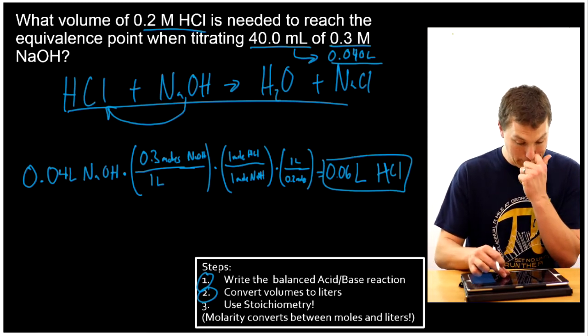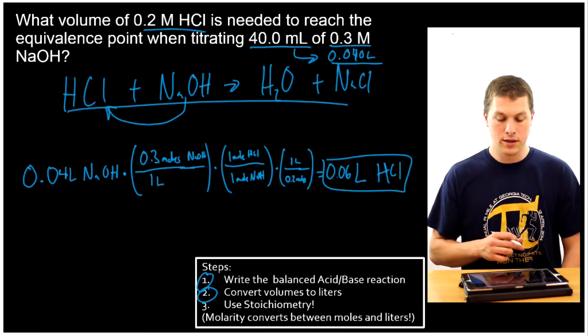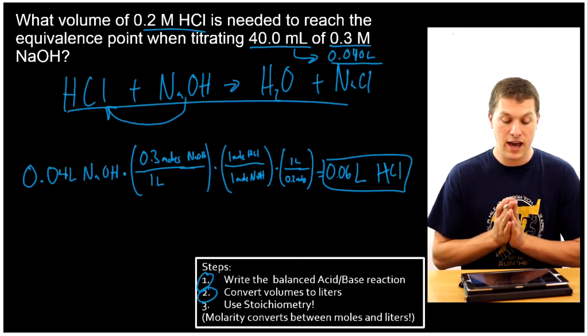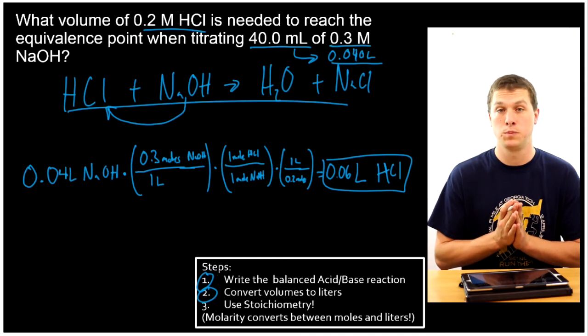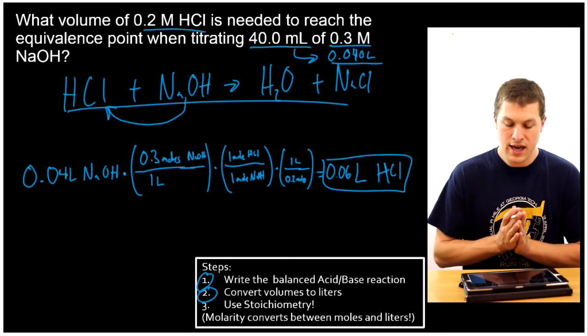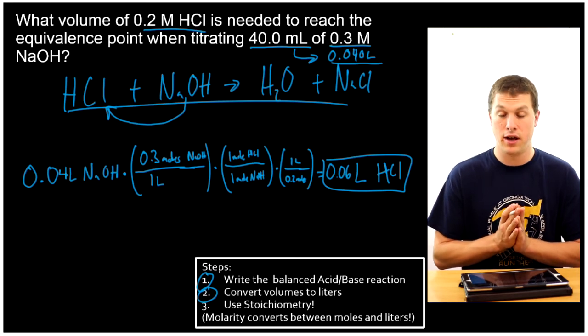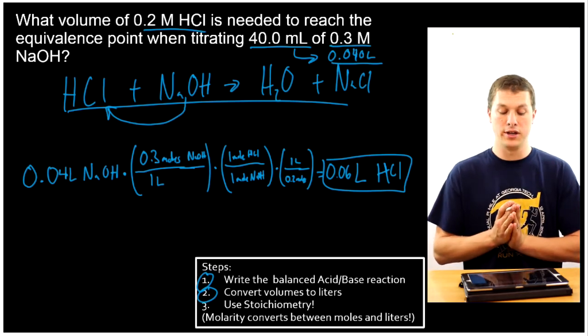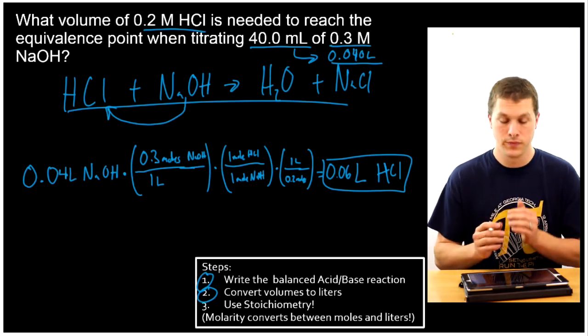So in this problem, what we did is we took the volume and concentration of sodium hydroxide we had down in our flask. And we calculated how much 0.2 molar HCl we need to reach the equivalence point. What this is saying is, if I add 0.06 liters of HCl, that's at 0.2 molar. It'll completely neutralize 40 milliliters of 0.3 molar NaOH.